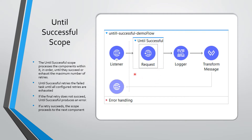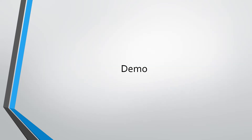The invocation of these tasks and execution of these requests we need to put inside the Until Successful scope. Until Successful scope has a property called Max Retry. We can set this property — for example, we can set this value to five. In that case, Until Successful will keep executing these requests until it succeeds or it completes all five attempts. If it succeeds, all components that come after this scope will execute. But if it does not succeed after all five attempts, then Until Successful will throw an error.